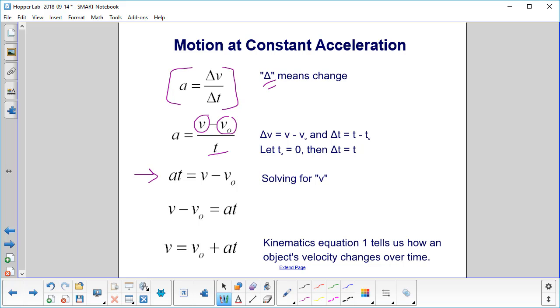Now we're going to solve for v. You isolate v all by itself, and you get v equals v0 plus at. This tells us how an object's velocity changes over time when it has an acceleration. So kinematics equation 1 actually just comes from the definition of acceleration.